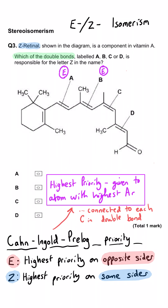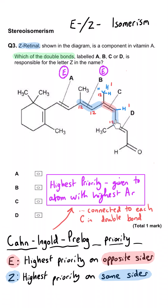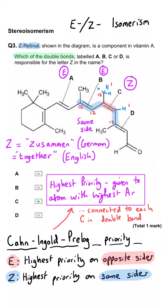Moving to double bond C: again we have carbons on both sides. Using the same outward-working rule, one branch goes carbon then carbon, the other goes carbon then hydrogen — so the carbon-carbon branch is higher priority. On the right-hand side there's a hydrogen off one branch, making the other branch higher priority. Both highest priority groups point in the same direction — they're on the same side — so double bond C is Z.